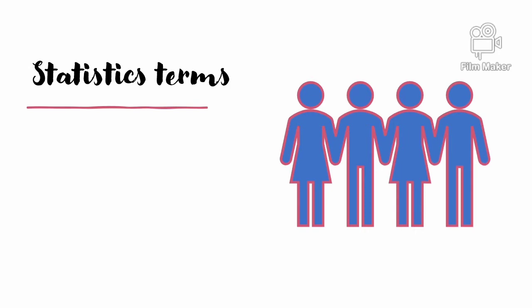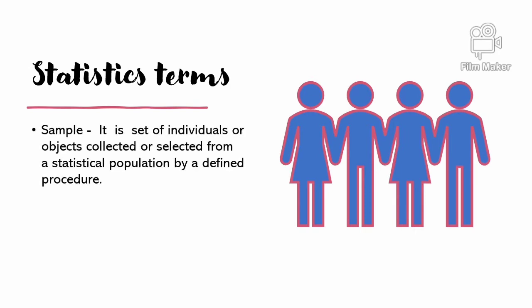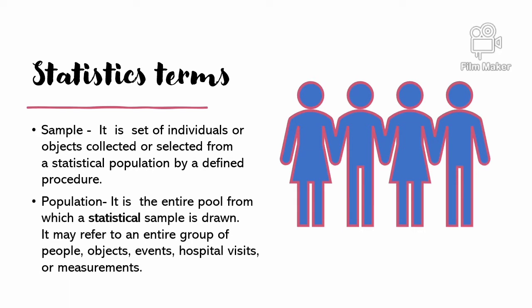Statistics Terms. A sample is a set of individuals or objects collected or selected from a statistical population by a defined procedure. A population is the entire group from which a statistical sample is drawn. It may refer to the entire group of people, objects, events, hospital visits, or measurements.